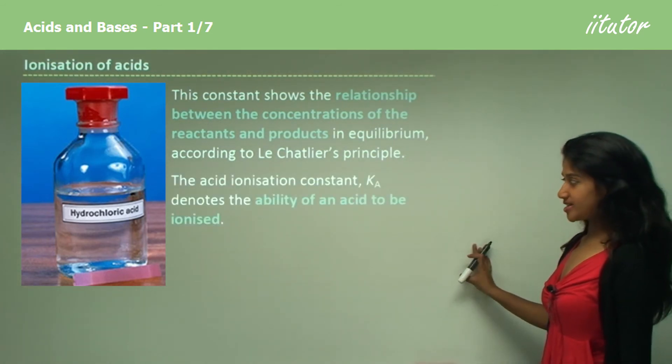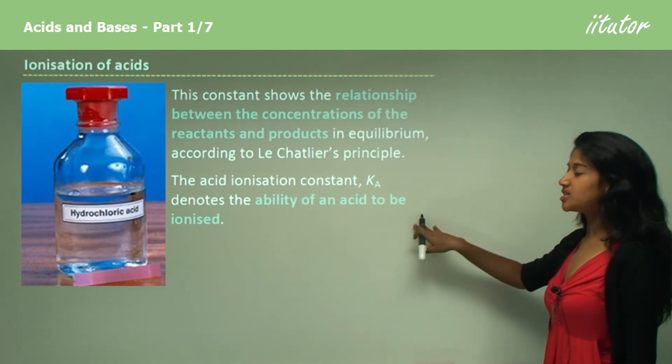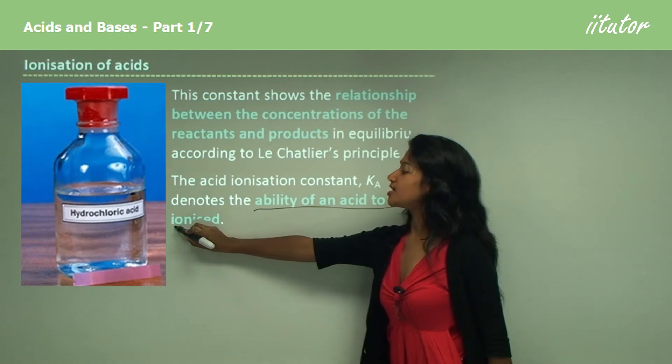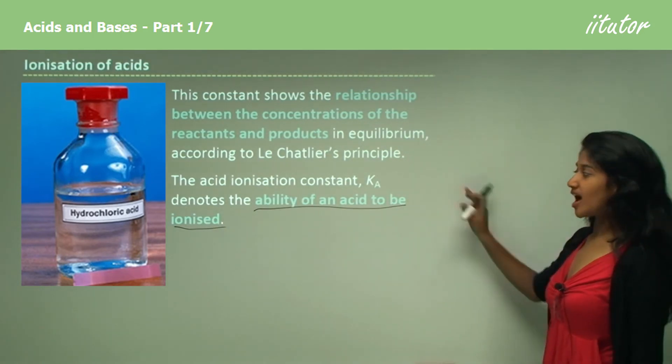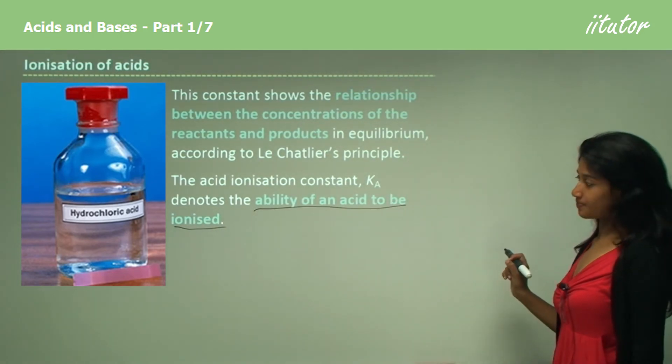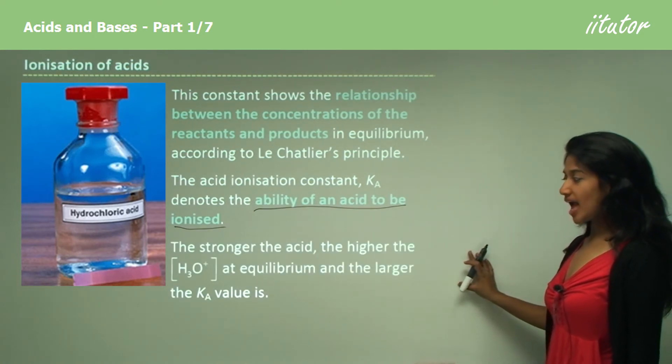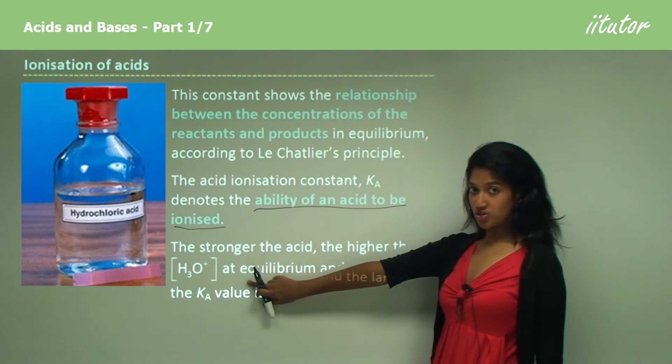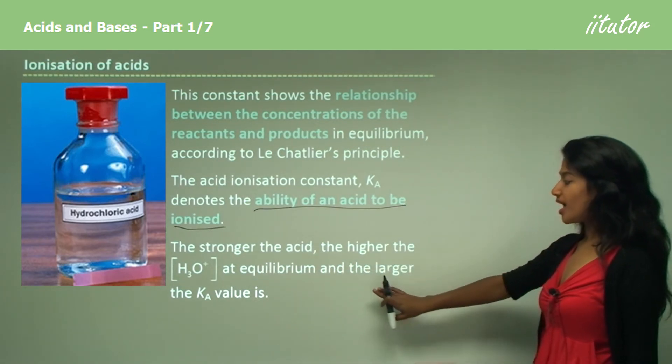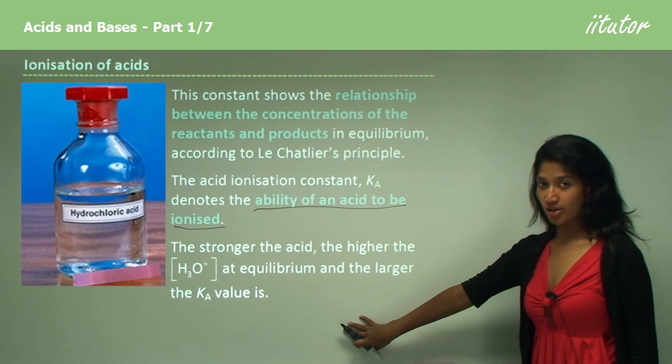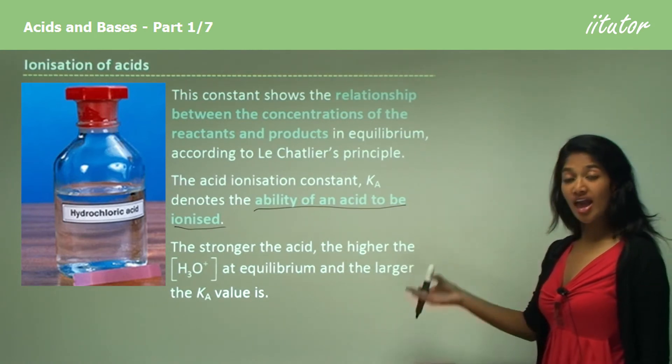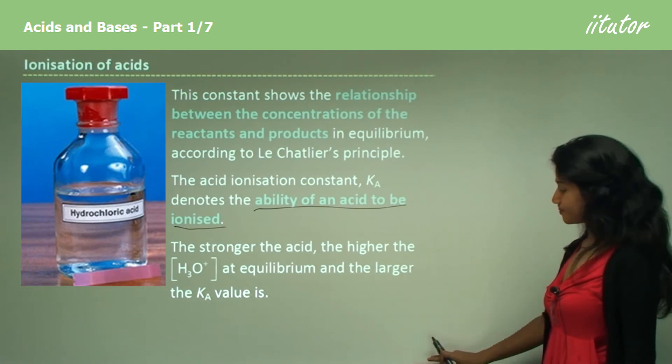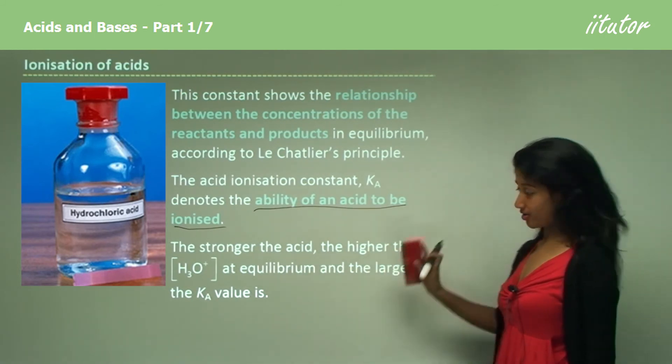The acid ionization constant Ka denotes the ability of an acid to be ionized. The stronger the acid, the higher the hydronium ion concentration at equilibrium, and the larger the Ka value. As the Ka value increases, we know it is a stronger acid because there are more hydronium ions.